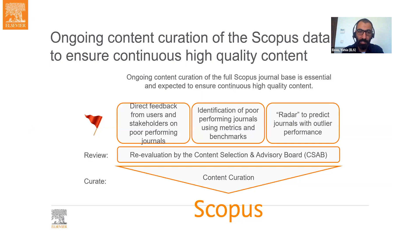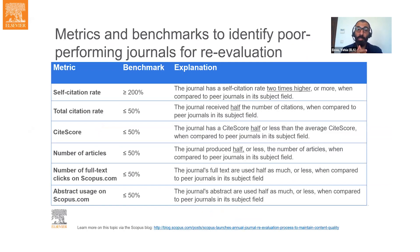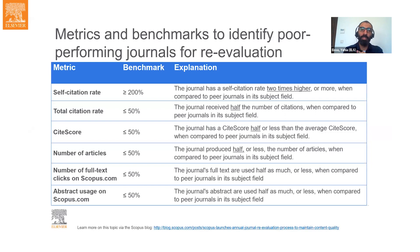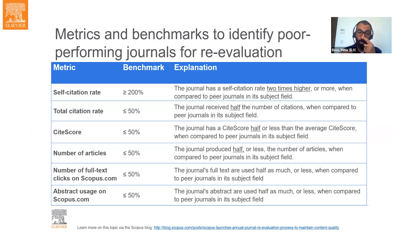The metrics and benchmarks used to identify poor performing journals always compare a journal against peers within its own subject field, since different subject areas have different citation behaviors. The six metrics are: self-citation rate exceeding 200% more than peer journals; total citation rate less than 50% of peers; CiteScore less than 50% of peers within its subject area; number of articles less than 50% of peers; number of full-text clicks on Scopus less than 50% of peers; and abstract views on Scopus less than 50% of peers.